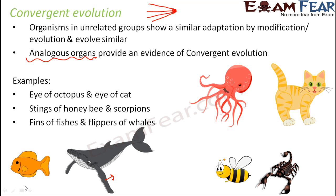Similarly, bats and birds are not related groups — bats are mammals. But still, both evolved with wings, and wings help both of them to fly. So the function of the wings is similar, but their structures are different. They are unrelated groups of organisms. These are all examples of convergent evolution.